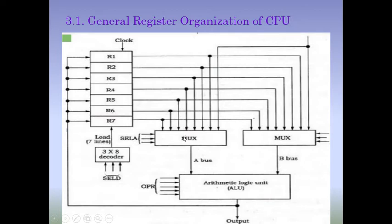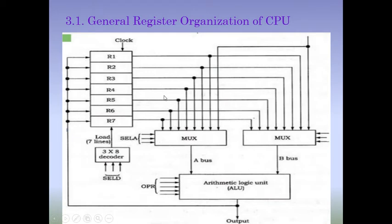This multiplexer set performs the common bus function. For Bus A, we have three selection input bits — SELA — for selecting which register's content to transmit onto Bus A. With 3 selection bits, we have 2 to the power 3, which equals 8. So we can select a total of 8 registers from this set of registers and get the content of any register onto Bus A through the multiplexer.